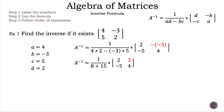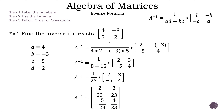Let's continue to simplify the denominator by adding. Our result is 23, because 8 plus 15 is 23. Now let's multiply our fraction 1 over 23 to each element inside the matrix. Now we have our inverse matrix: in row 1 we have 2 over 23 and 3 over 23, and in row 2 we have negative 5 over 23 and 4 over 23. That is the answer for example 1.